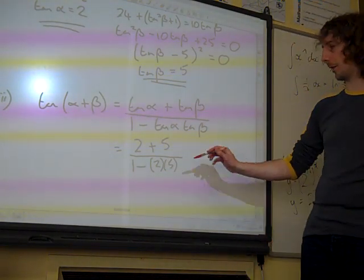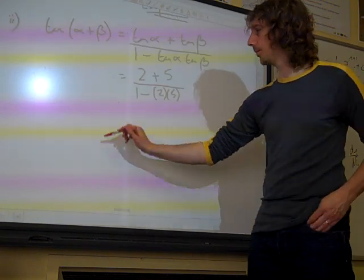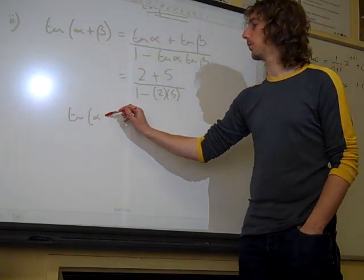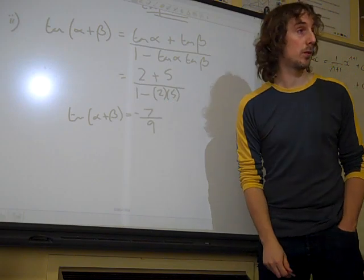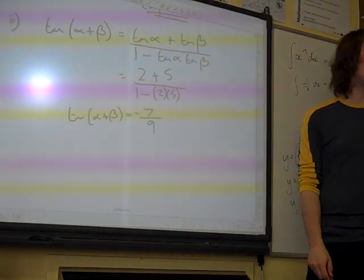And so we have tan alpha plus beta is 7 over... minus 7 over 9. We've got 9 on the bottom. And there we go.